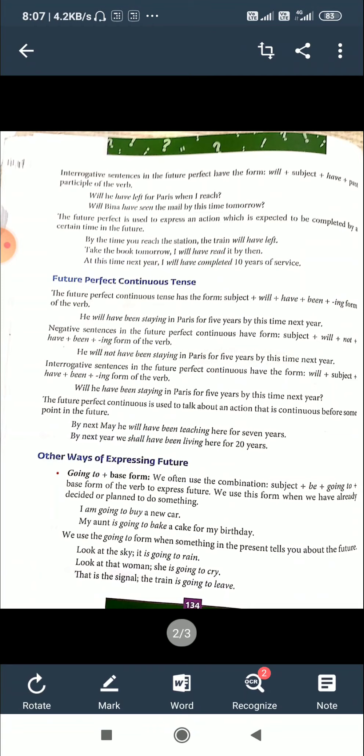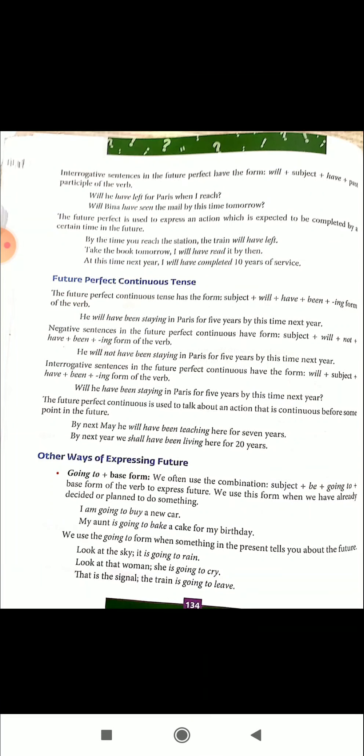For the interrogative in Future Perfect Continuous, the form is: will plus subject plus have plus been plus ing form of the verb. For example: 'Will he have been staying in Paris for five years by this time next year?' The Future Perfect Continuous is used to talk about an action that is continuous before some point in the future. Examples: 'By next year, he will have been teaching here for seven years.' 'By next year, he shall have been living here for twenty years.'